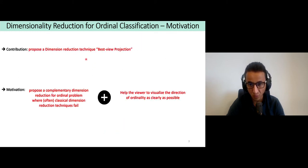In this paper we present a dimension reduction technique called the Best View Projection for ordinal classification. We present it as a complementary dimension reduction that helps the viewer to visualize the ordinality as clearly as possible, whether in a 2D or 3D feature space.